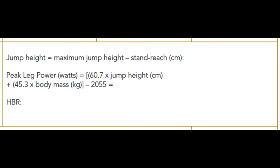Looking at the requirements for the test, in order to calculate peak leg power and wattage, we need a vertical jump height in centimeters and the participant's body mass in kilograms. Ensure that you get the participant's body mass beforehand. Their vertical jump height is their maximum jump height minus their standing reach, and we use that to calculate their health benefit rating.